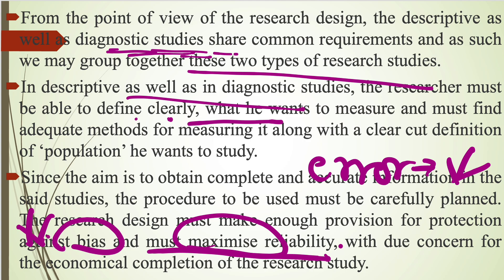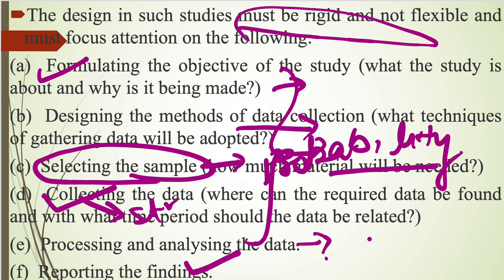The result found after the research process should be right and complete. These are the basic steps in research process which the researcher should follow: first, formulating the objective of the study; second, designing the methods of data collection; third, selecting the sample; fourth, collecting the data; fifth, processing and analyzing the data; and last, reporting the findings. All these points should be clear and predefined in descriptive as well as diagnostic research studies.